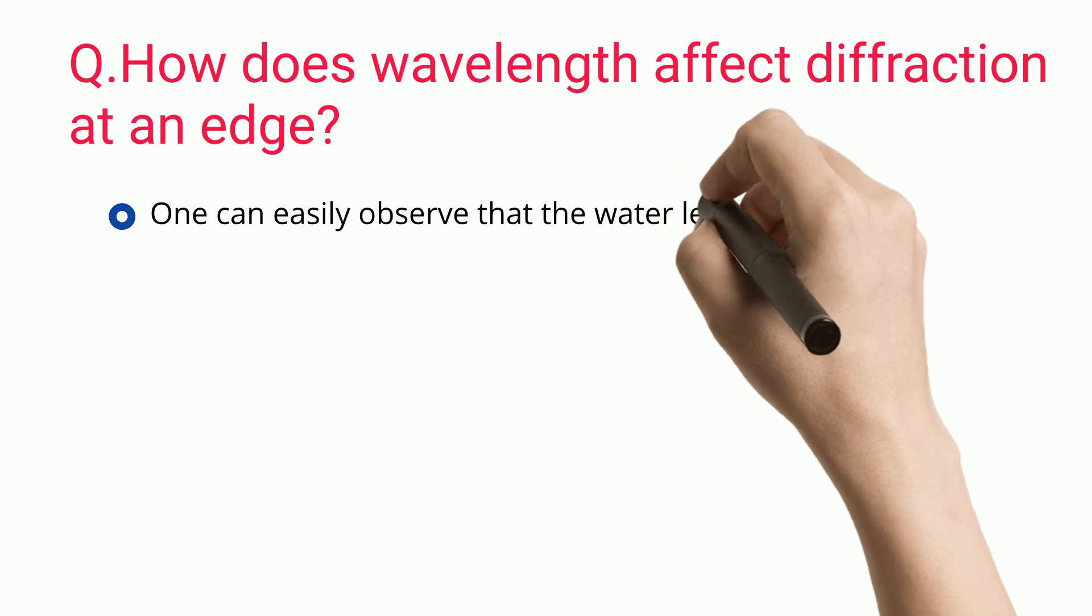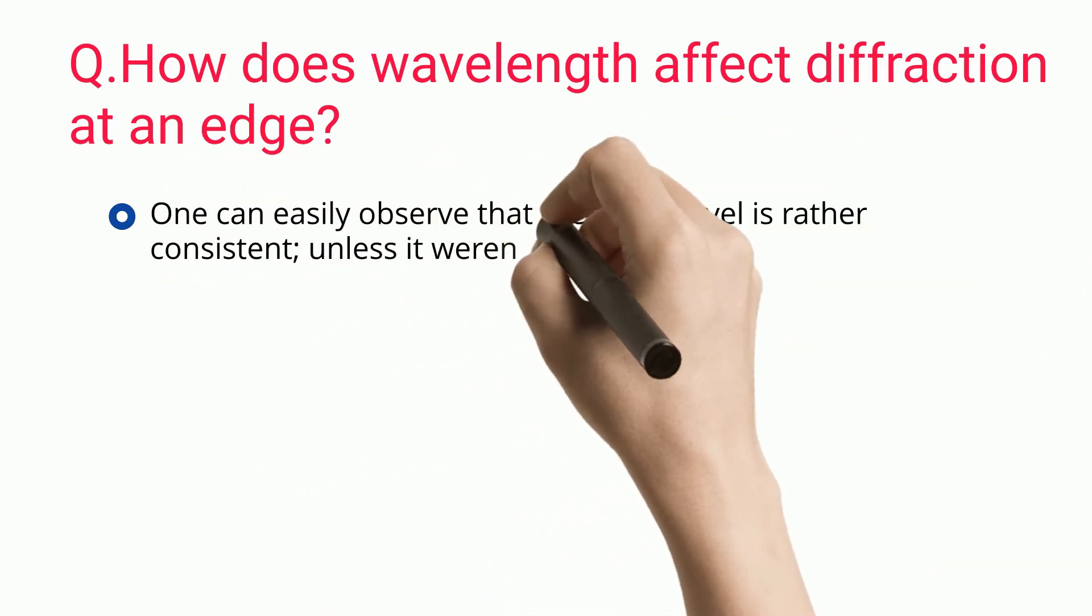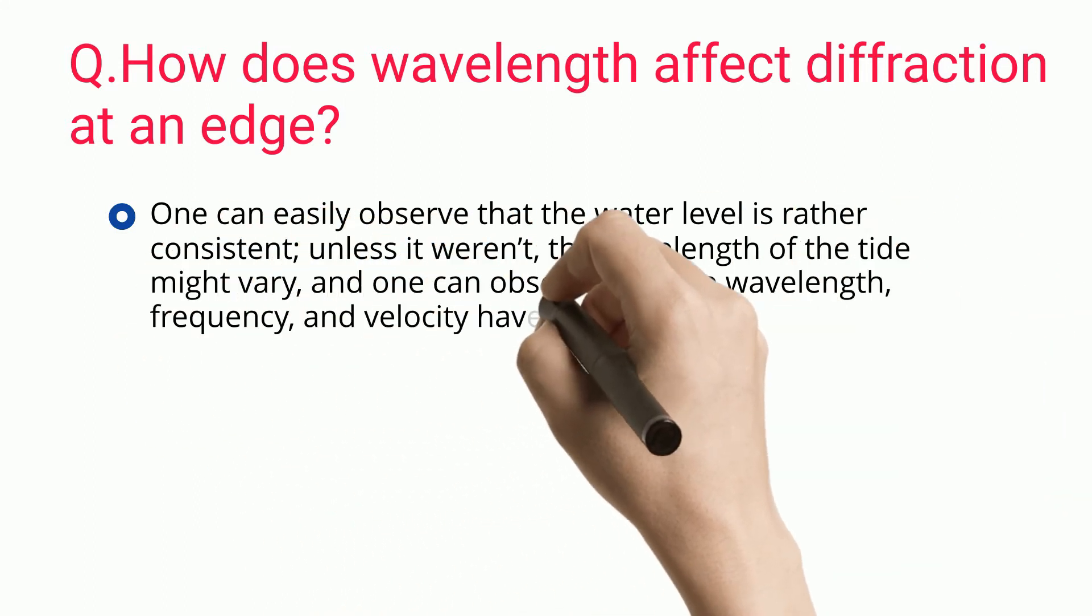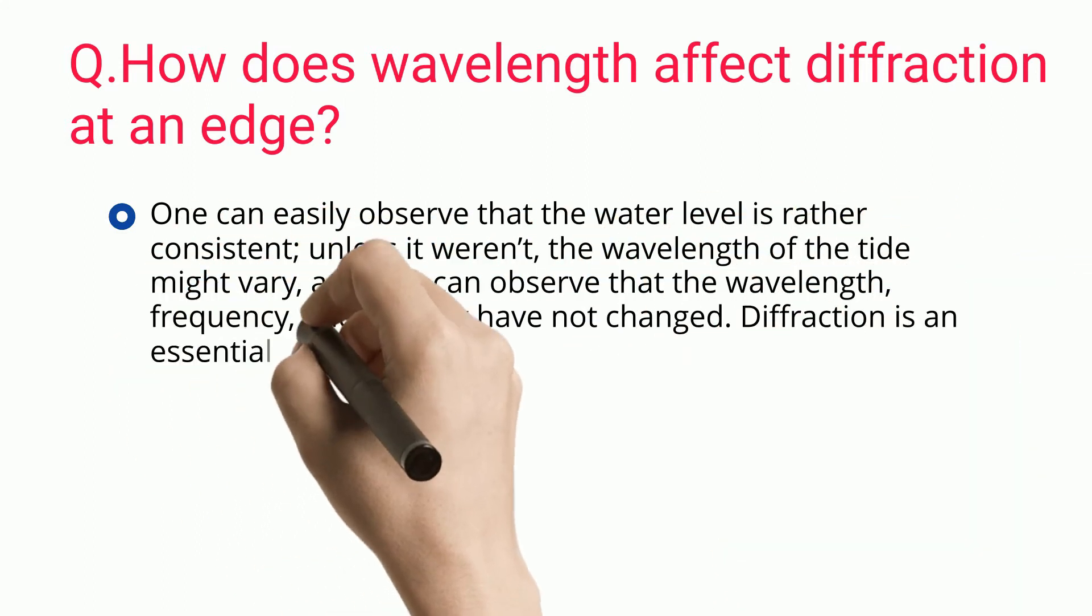One can easily observe that the water level is rather consistent, unless at where the wavelength of the tide might vary, and one can observe that the wavelength, frequency, and velocity have not changed.